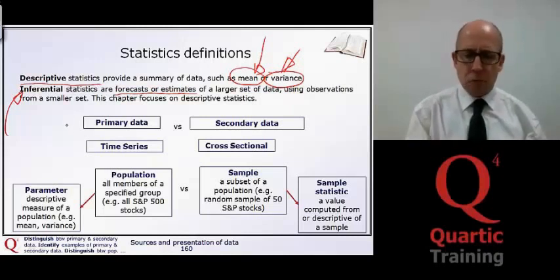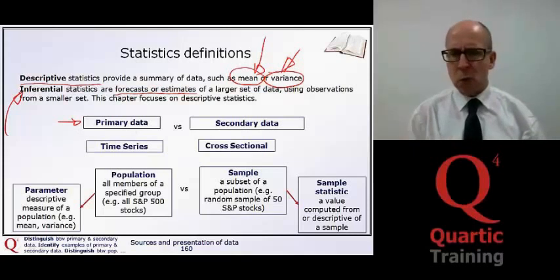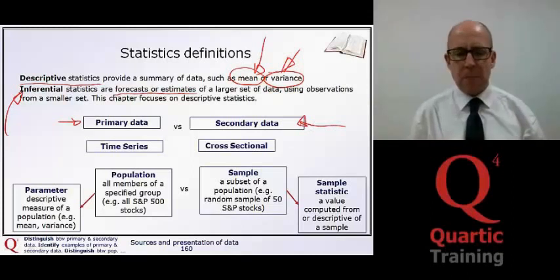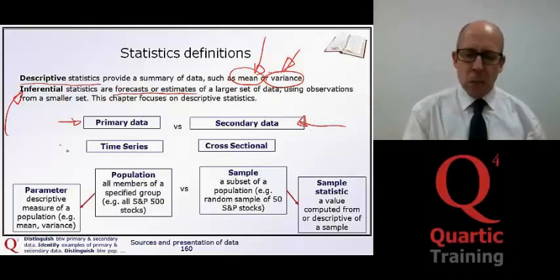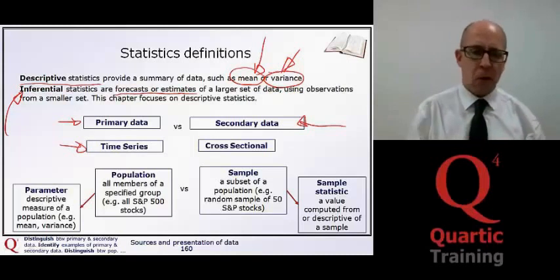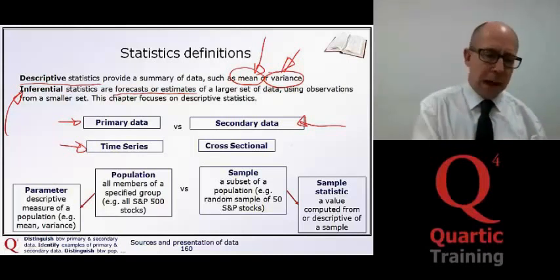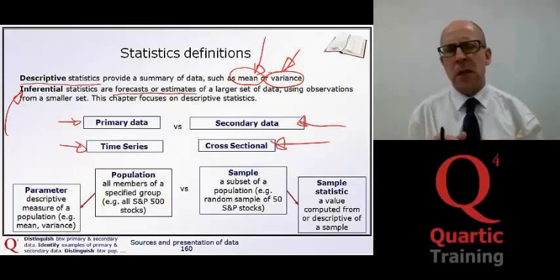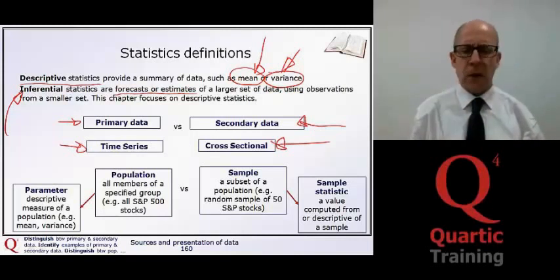We distinguish between primary data and secondary data. Primary data is that which we gather directly, and secondary data is really derived from that primary data. And then also, we look at time series data. We might look at the value of a share price through time. Compared to that, we might look at cross-sectional data. We might look there, for example, at different sectors, industrial sectors, and look at the behaviour of equity markets in those different sectors.